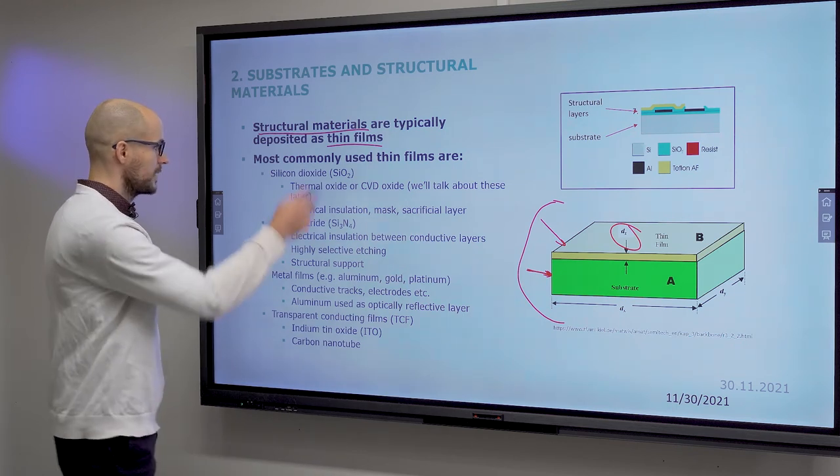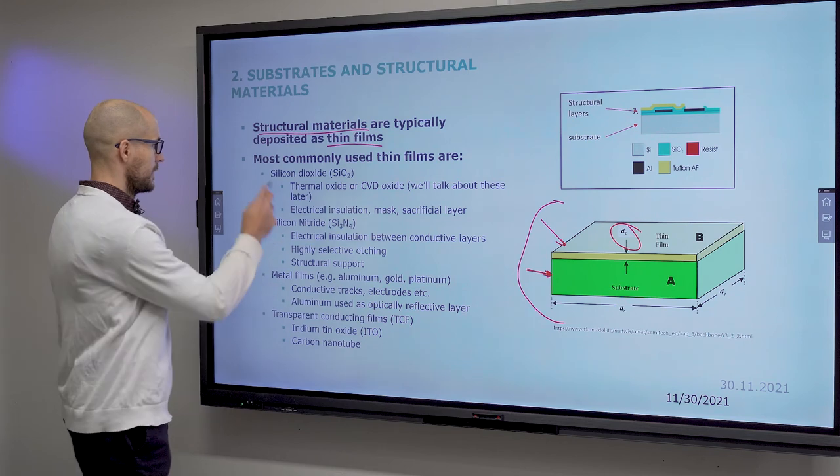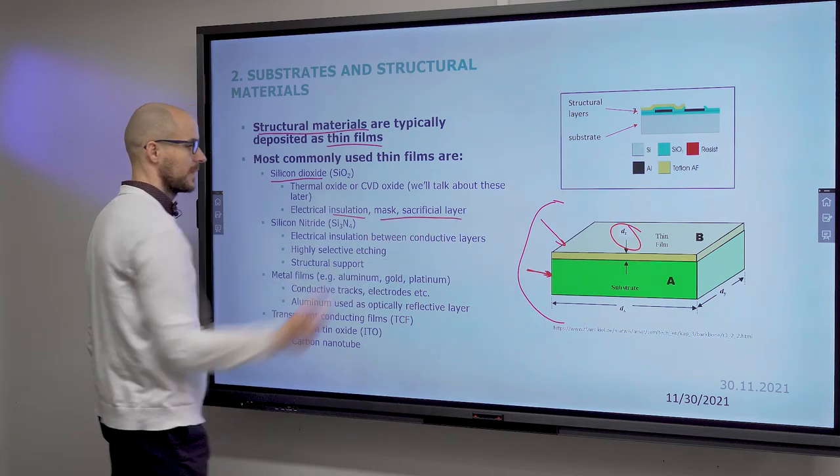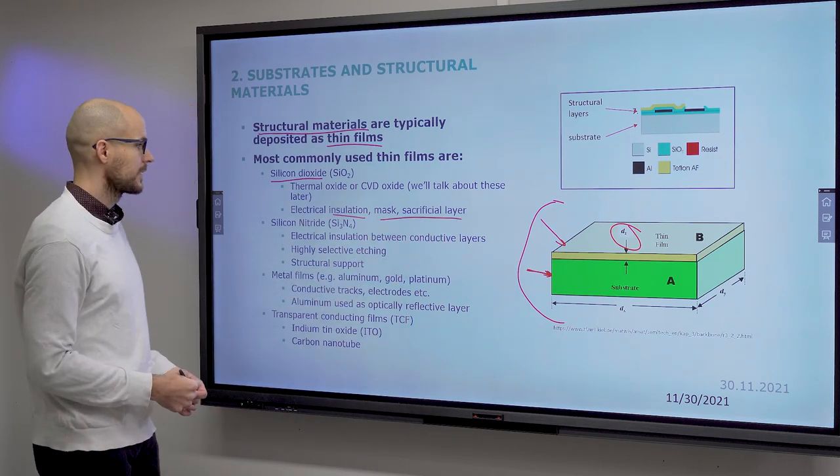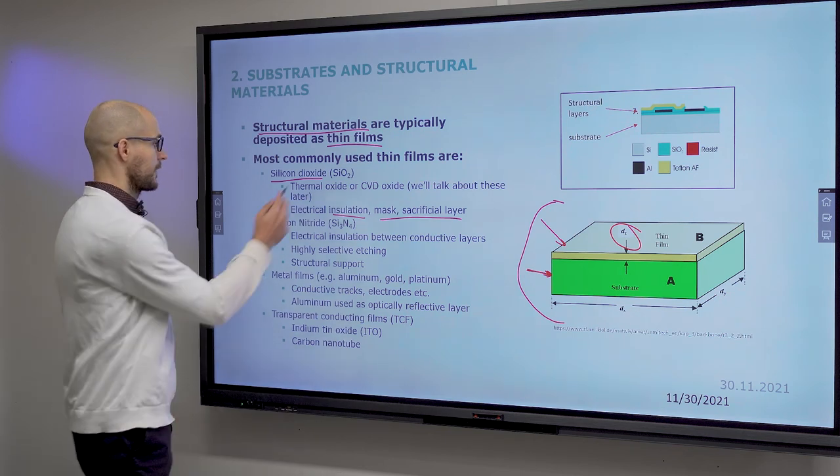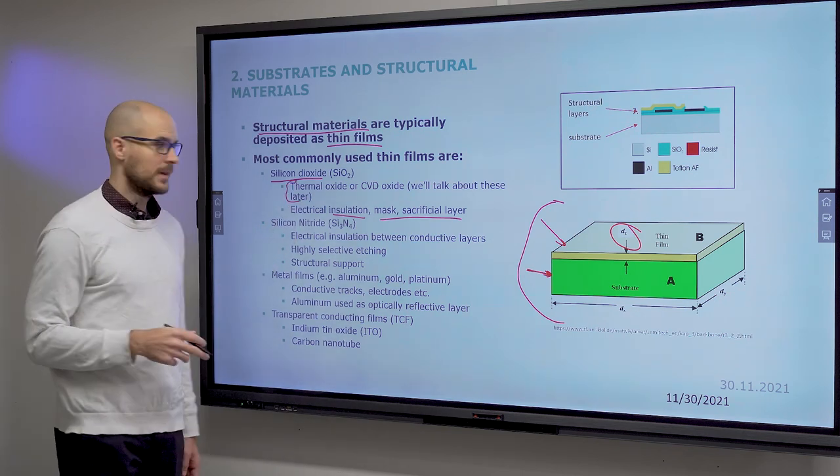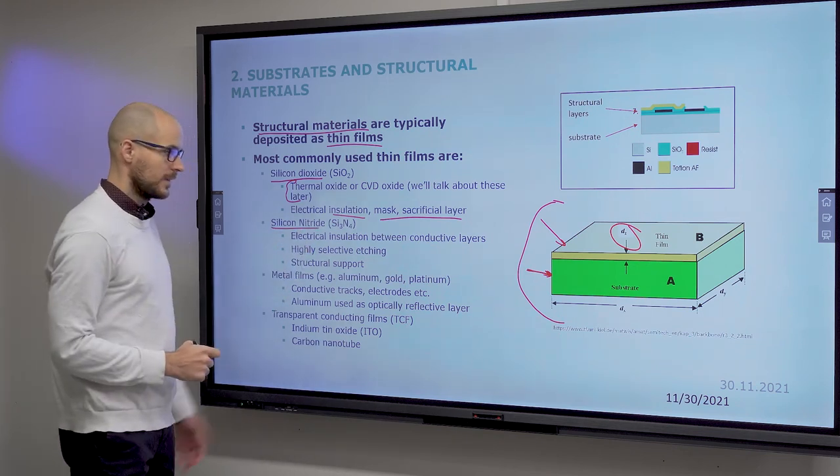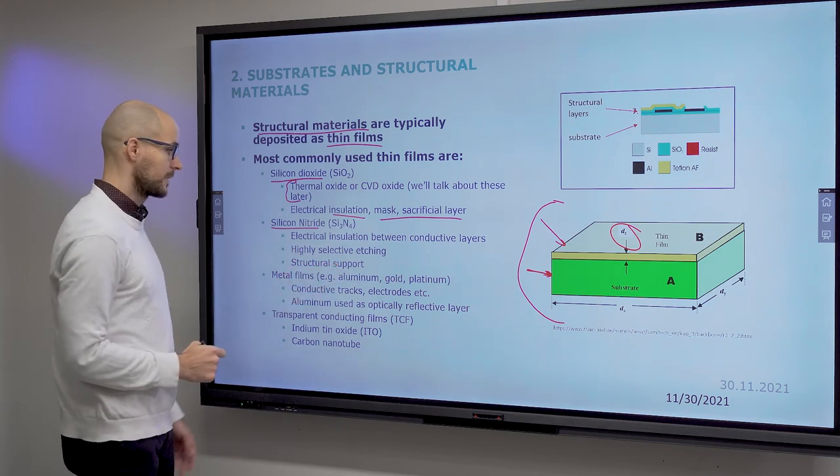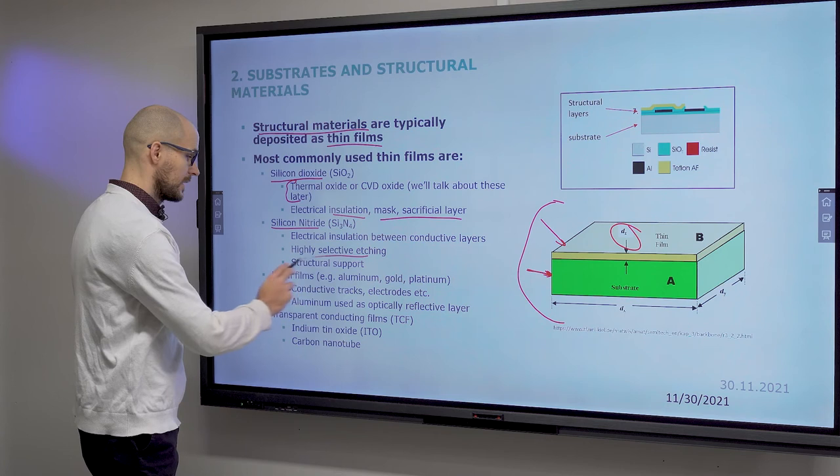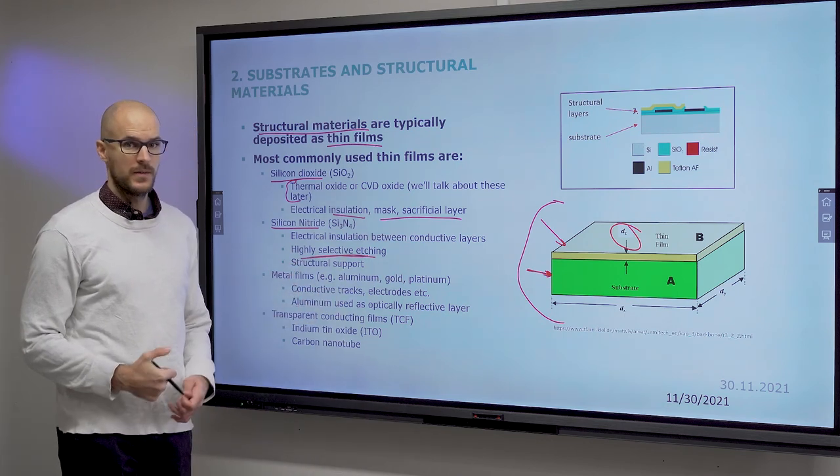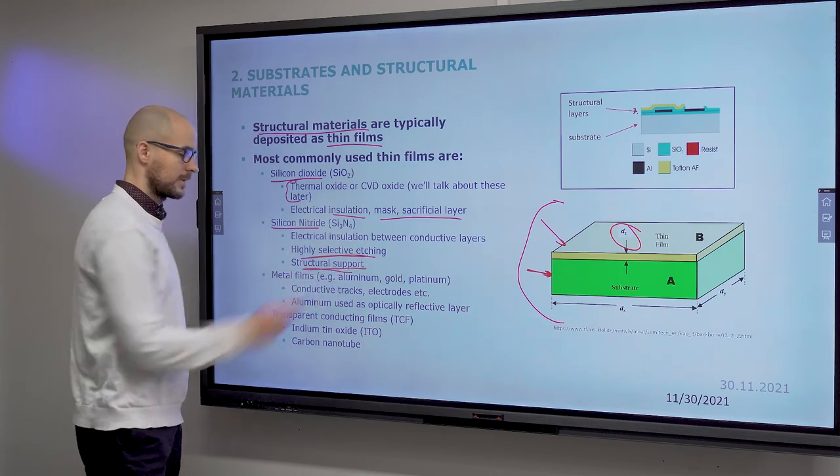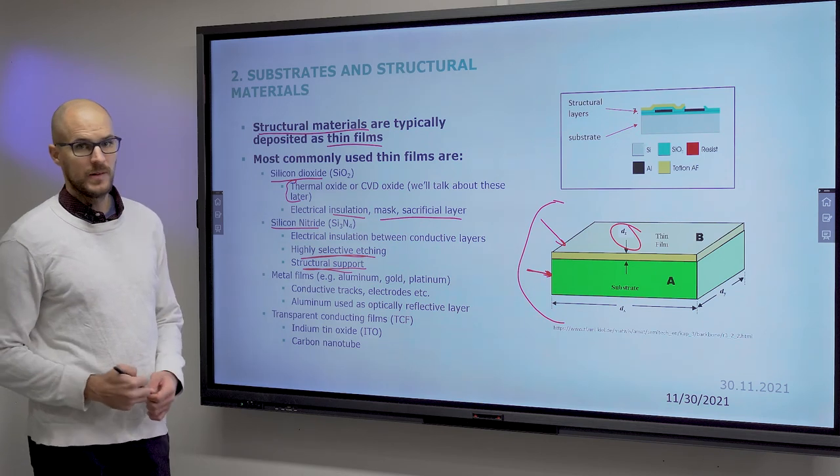And most commonly used thin films: Silicon dioxide, good for insulation. Also used often as masks and sacrificial layers. You will hear what these mean. You will also see the process steps that can create this silicon dioxide. Silicon nitride is a good electrical insulator between different conductive layers. You can etch silicon nitride highly selectively. You will see what that means later. It can also be used as structural support, which is particularly important in MEMS.